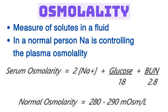Osmolality — what is it? It's a measure of solutes in a fluid. Forget the difference between osmolality and osmolarity — that's garbage. For serum or plasma, osmolality is mainly due to three things: sodium, glucose, and blood urea nitrogen (BUN). They multiply sodium by two — why? Because sodium comes with chloride: one for sodium, one for chloride. Glucose is divided by 18, and BUN is divided by 2.8.